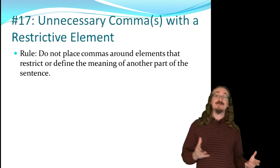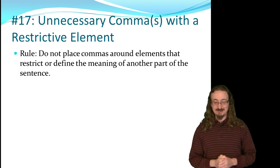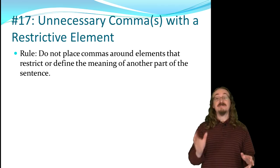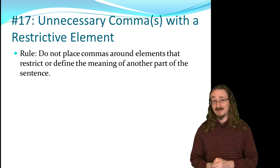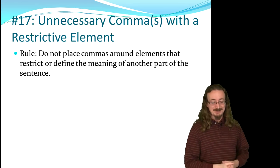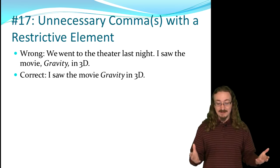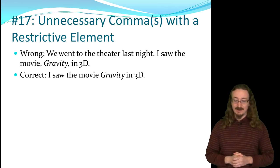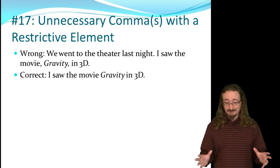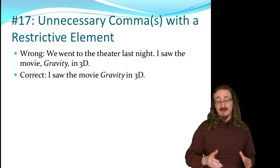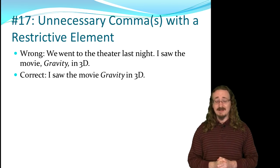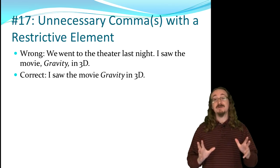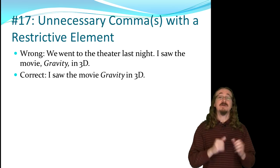Number 17: unnecessary commas with a restrictive element. Don't put commas around an element that restricts or defines the meaning of another part of the sentence. For example, it's wrong to say 'I saw the movie, gravity, in 3D.' You don't want commas around 'gravity' because it defines which movie you saw. Without it, the reader doesn't know what movie it is — so 'gravity' is a restrictive element, restricting the meaning of 'movie' to just the one called Gravity.